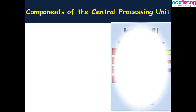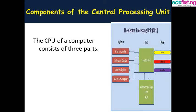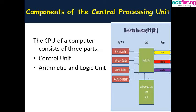What are the components — the different parts of the central processing unit? There are three different parts identified: one is the control unit, second is the arithmetic and logic unit, and the third one is the registers. We'll be taking them one after the other.